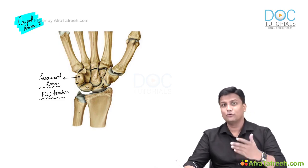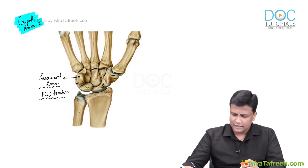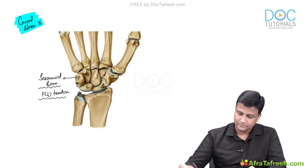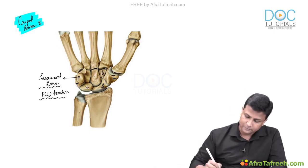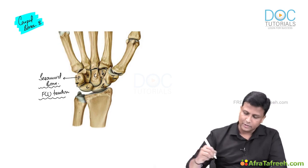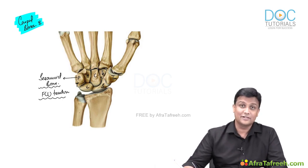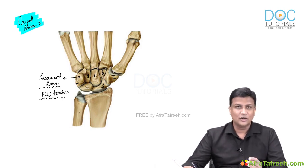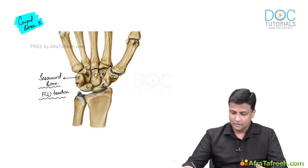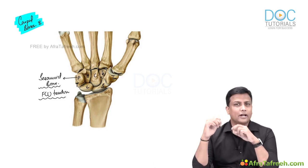Now let us move to the distal row. First you will find the trapezium, with the tubercle of the trapezium, then trapezoid, then the largest one — capitate — and then hamate, where you can appreciate the hook of the hamate. The mnemonic is: 'She Looks Too Pretty, Try To Catch Her' — scaphoid, lunate, triquetrum, pisiform, trapezium, trapezoid, capitate, hamate — your eight carpal bones.